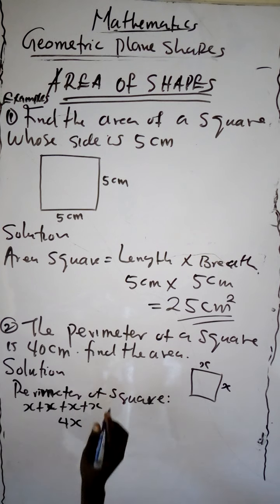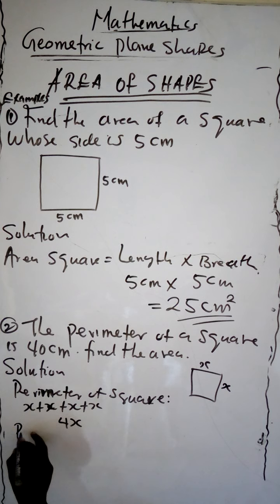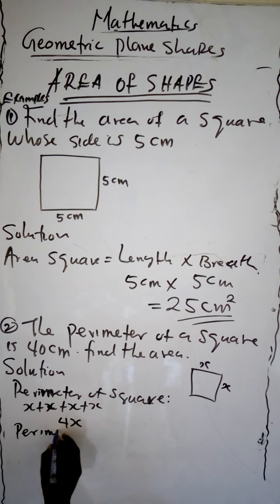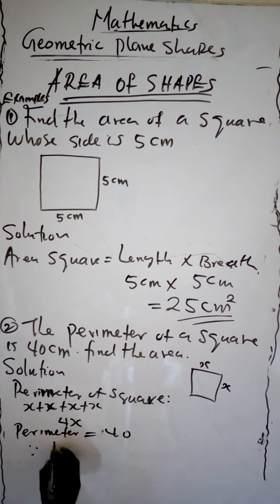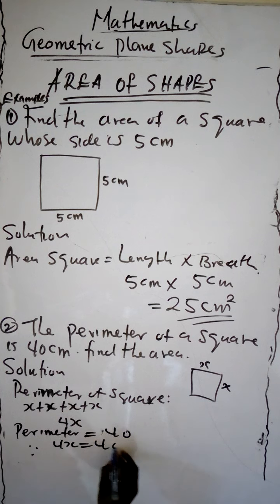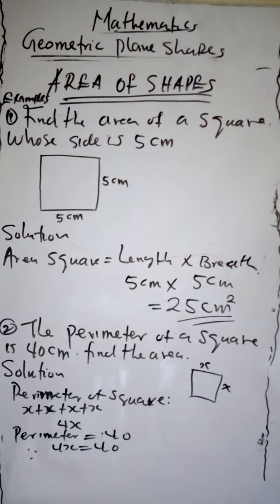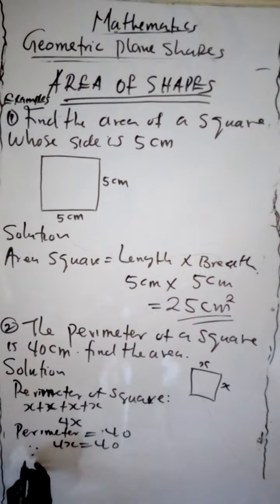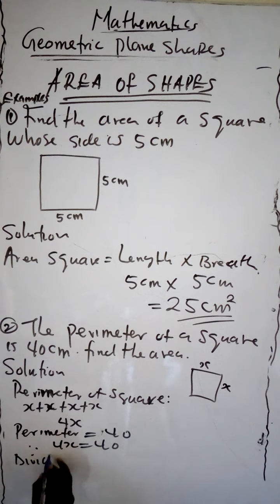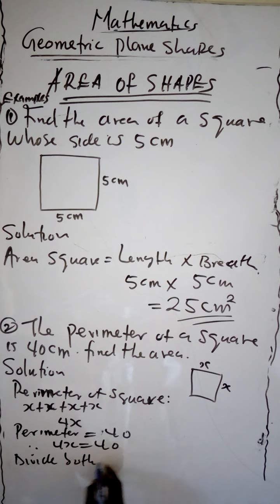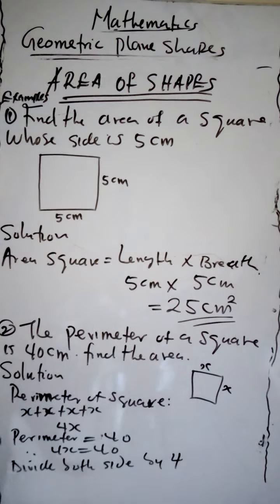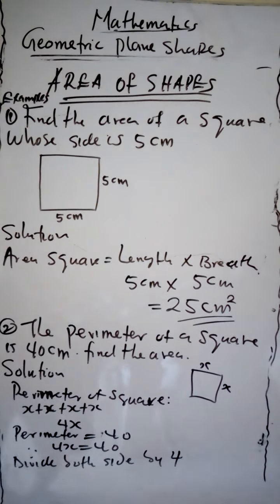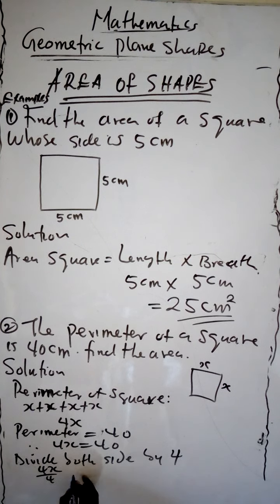Our perimeter is equal to 40. Therefore 4x equals 40. Then we divide both sides by 4. We have 4x over 4 equals 40 over 4.